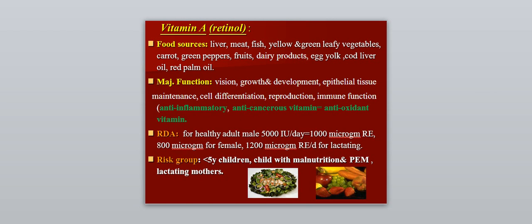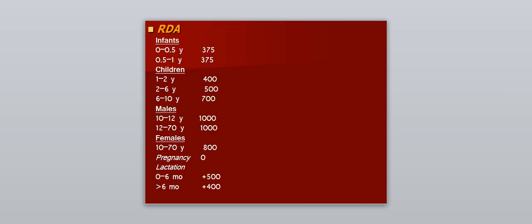The daily required amount for a healthy adult male is 5,000 international units per day, which equals 1,000 micrograms, and 800 micrograms for females. For lactating females, it is 1,200 micrograms. The risk group for vitamin A deficiency includes children below 5 years, mostly those with malnutrition or protein energy malnutrition, and lactating mothers, who are more prone to vitamin A deficiency.